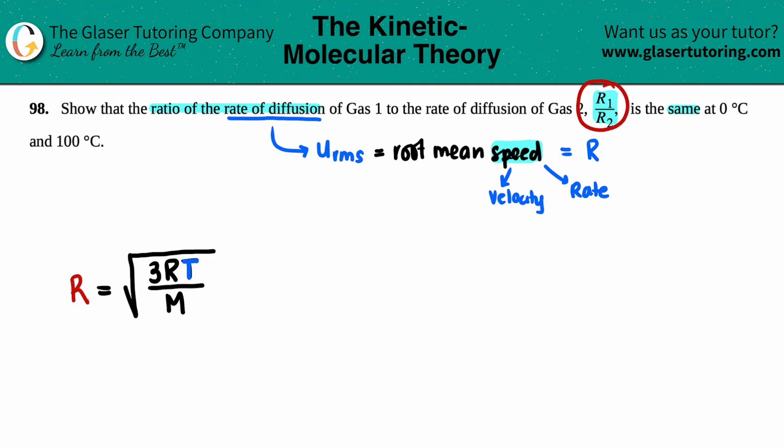Now, we just want to do rate one divided by rate two. So that means we would have one single thing for rate one, for gas one, and one single thing for gas two, for R2. So R1 divided by R2 equals the square root of something divided by the square root of something. So it's three times R times T divided by M1 all over three times R times T all over M2 for gas two.